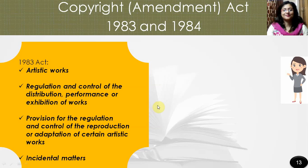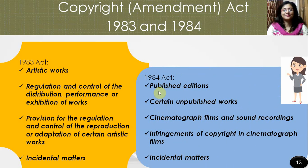In 1984, there was another Copyright Amendment Act, also made to amend the Copyright Act 1978, so as to make provision for copyright in published editions, to extend the term of copyright in certain unpublished works, to further define the nature of copyright in cinematograph films and sound recordings, to create certain presumptions in respect of proof of infringements in cinematograph films, to create certain new offenses, and to make provision for increased penalties and to provide for incidental matters.